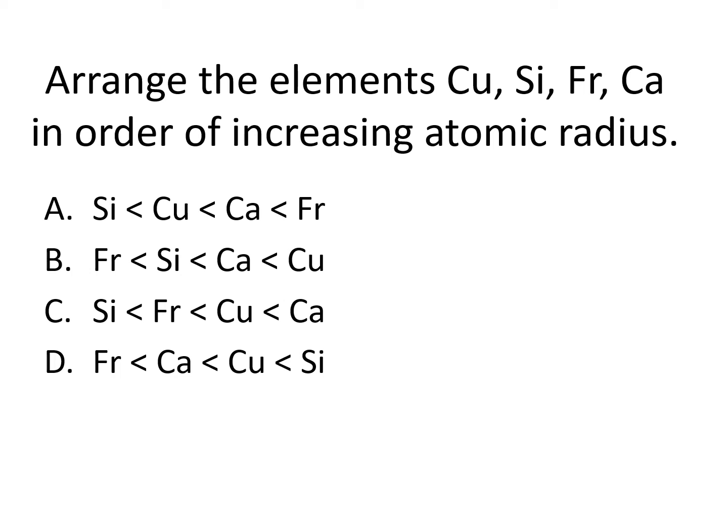Arrange the elements copper, silicon, francium, and calcium in order of increasing atomic radius. Increasing means you should arrange them from smallest to largest, and you should use less-than symbols to separate each atom. The correct answer is: silicon, then copper, then calcium, then francium.